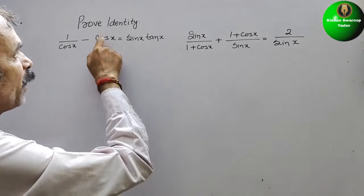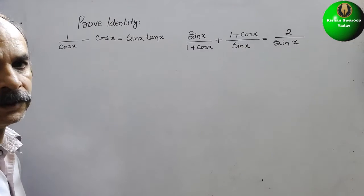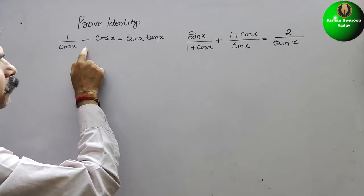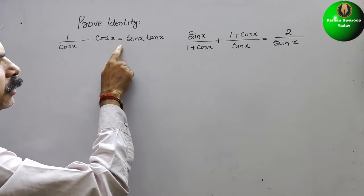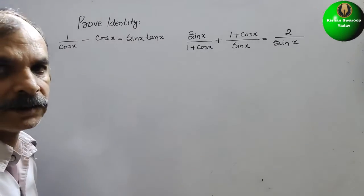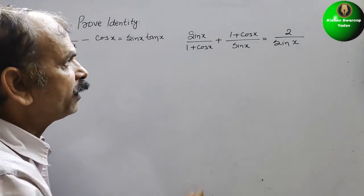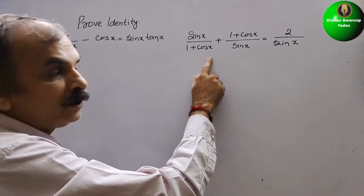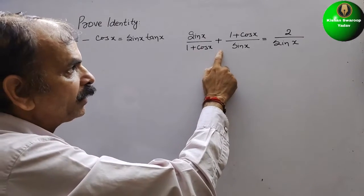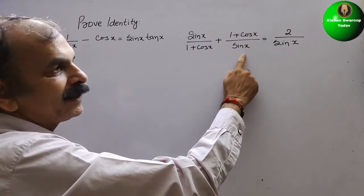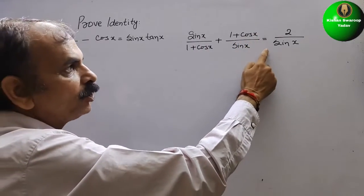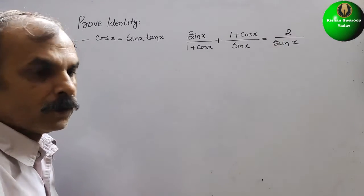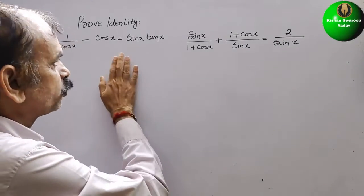Your question is: prove the identity. The first identity given is: 1 by cos x minus cos x is equal to sin x tan x. The second one given is: sin x by 1 plus cos x, plus 1 plus cos x by sin x, is equal to 2 by sin x. So first we will solve this.